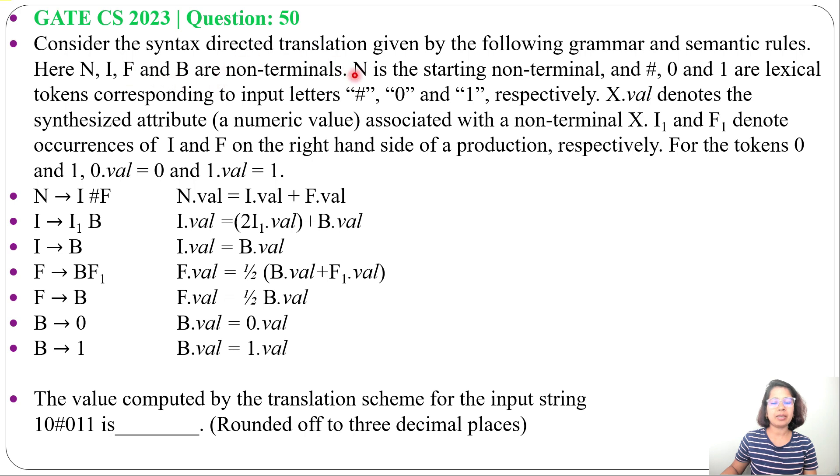Consider the syntax-directed translation given by the following grammar and semantic rules. Here, N, I, F and B are non-terminals. N is the starting non-terminal and # 0 and 1 are lexical tokens corresponding to input letters # 0 and 1 respectively. X.val denotes the synthesized attribute, or you can say numerical value associated with non-terminal X. I1 and F1 denote the occurrence of I and F on the right-hand side of the production respectively.